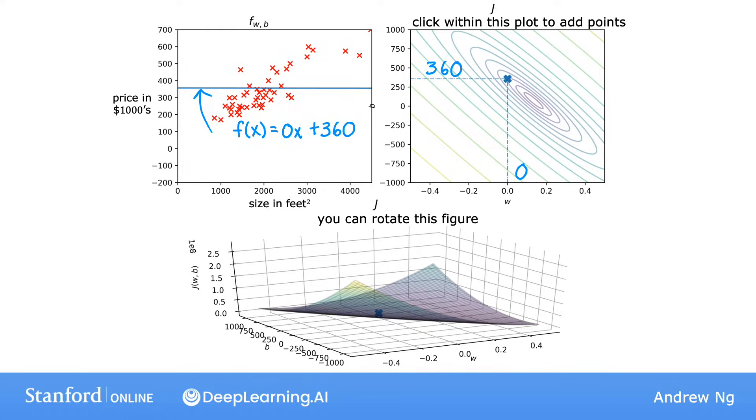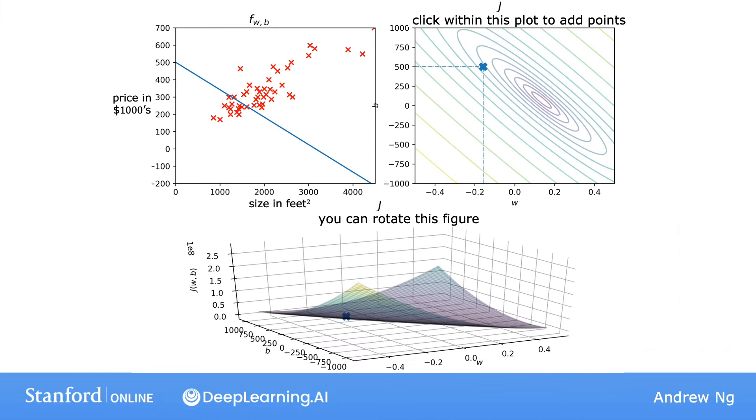Let's look at yet another example. Here's one more choice for W and B, and with these values, you end up with this line f of x. Again, not a great fit to the data. It is actually further away from the minimum compared to the previous example. And remember that the minimum is at the center of that smallest ellipse.